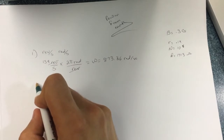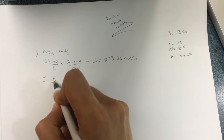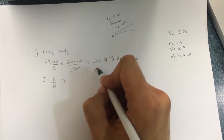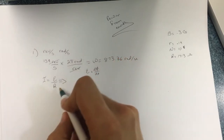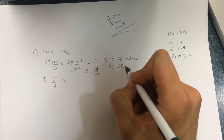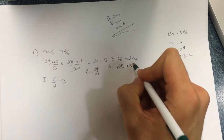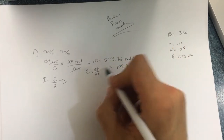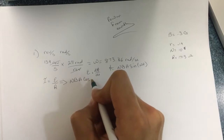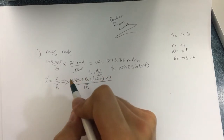What else do we need to find? We need to find the peak current. The peak current is the EMF divided by R, and the EMF is just dΦ/dt. The flux Φ equals NBAsin(ωt), so differentiating gives NBAcos(ωt)·ω, divided by R.